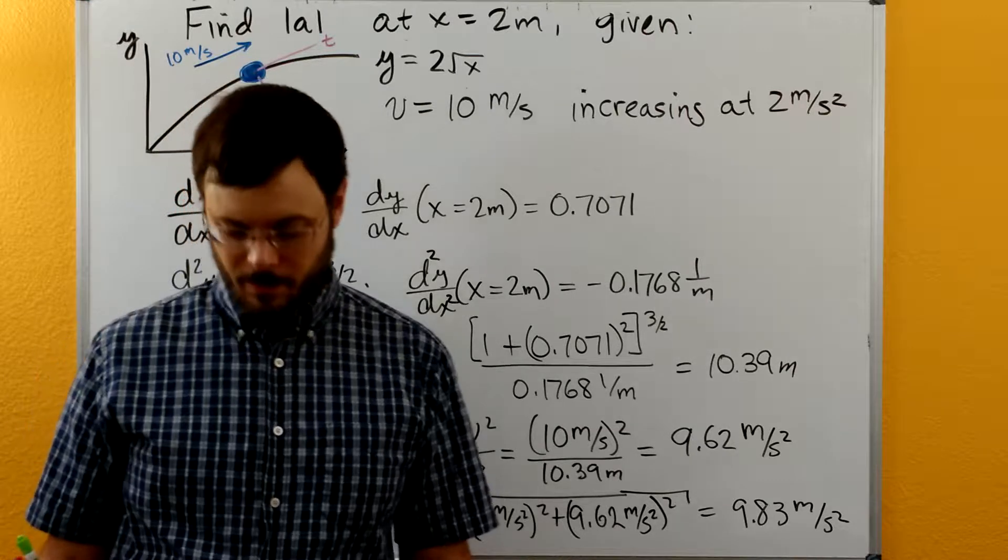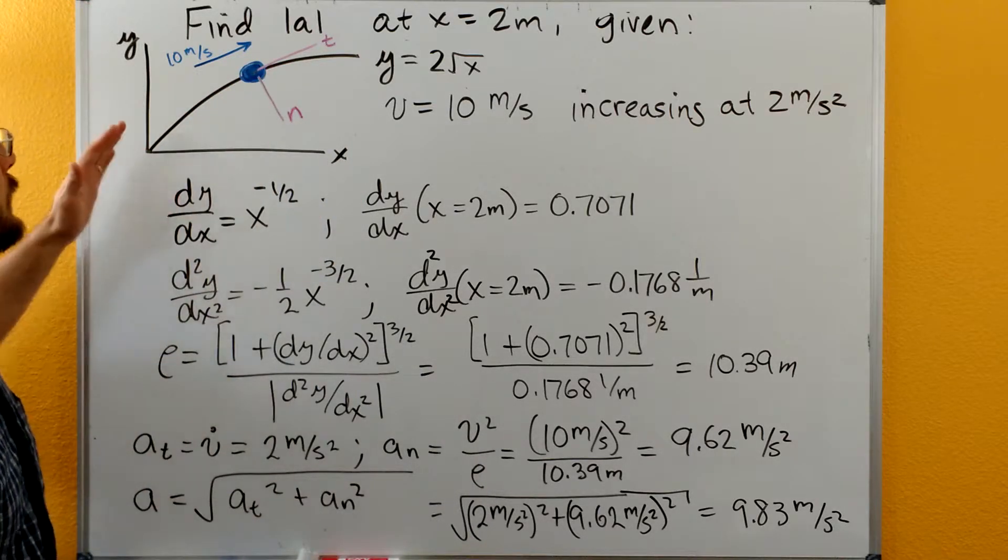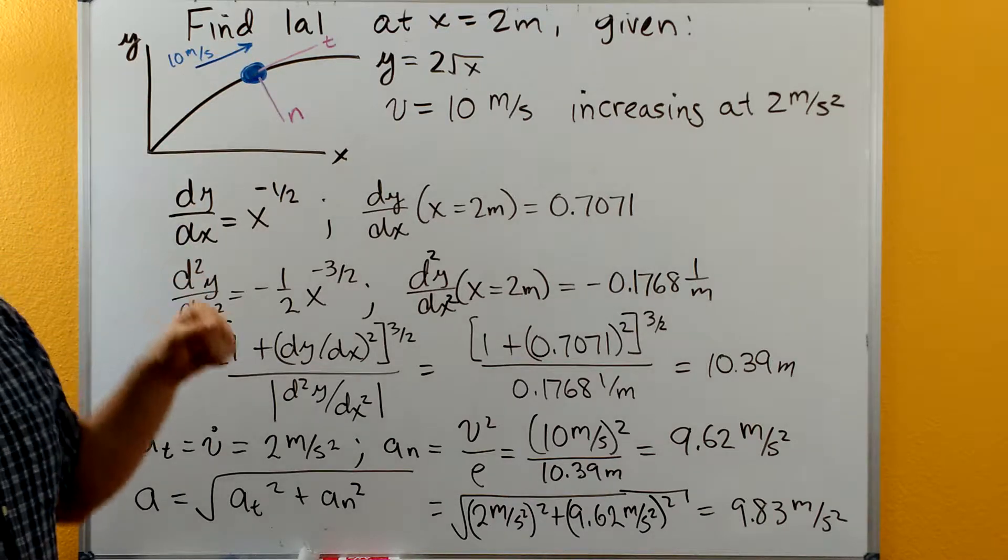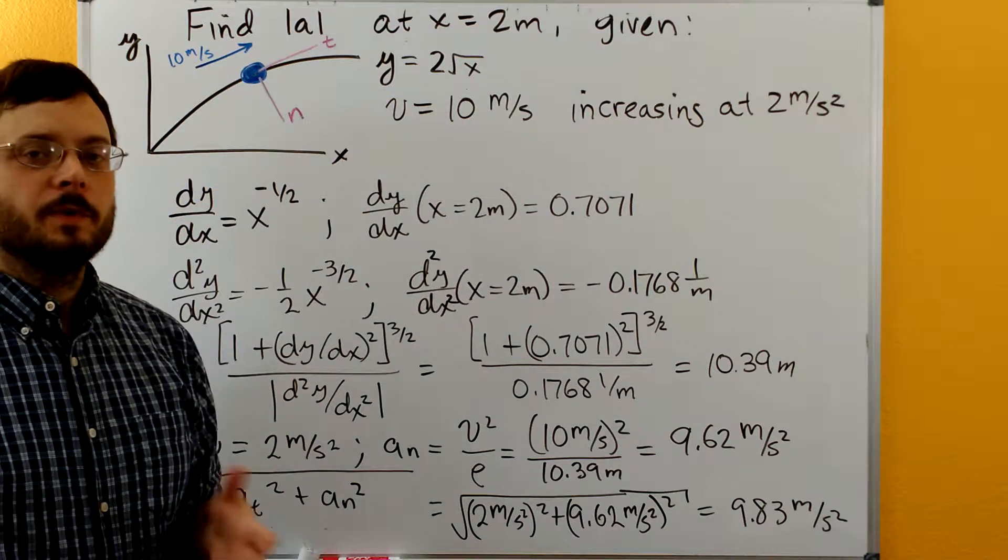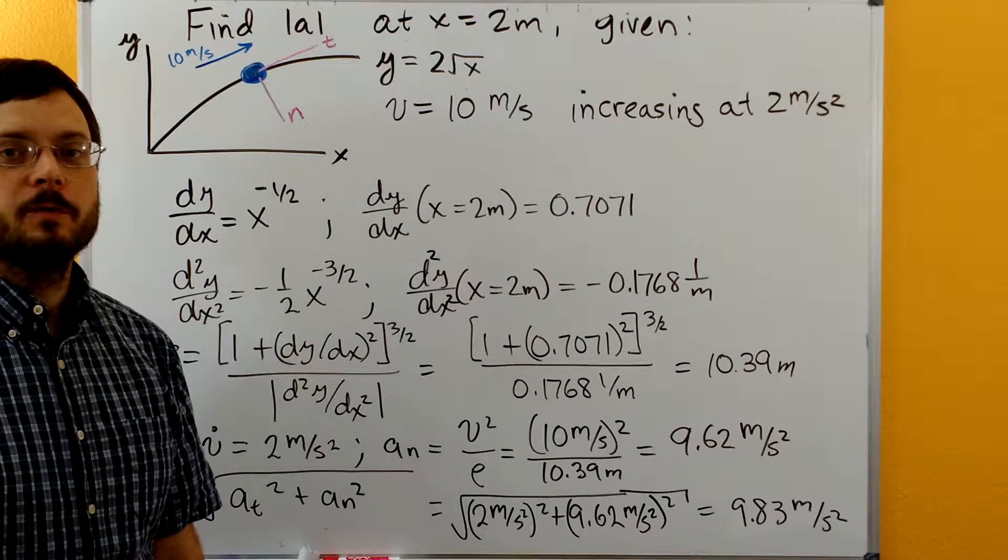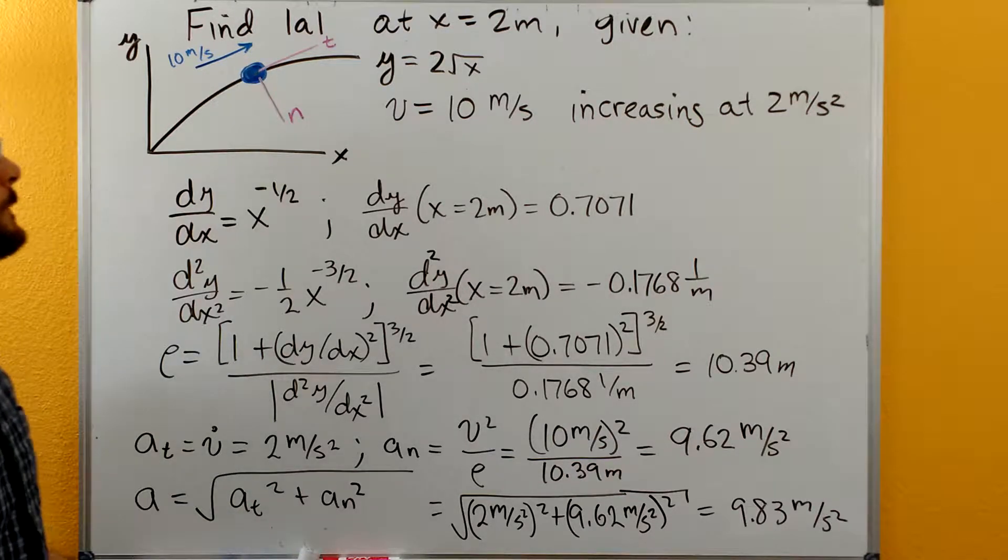Welcome to the dynamics tutorials. So with this problem, we have the same curve that we did a couple problems back. We have y is equal to two times the square root of x, but this problem is set up a little differently, and we'll have to use a different method to solve it.